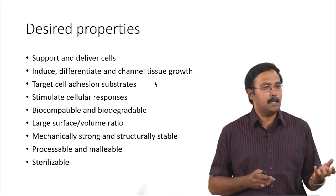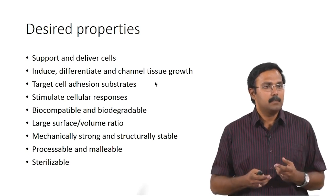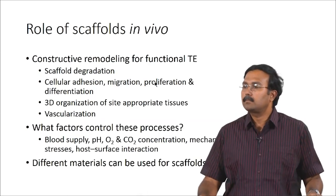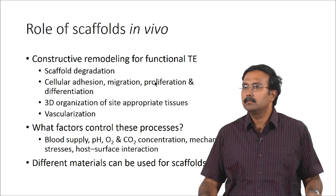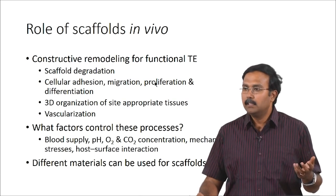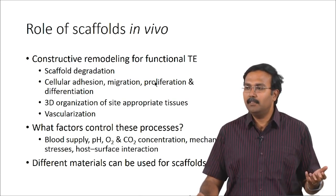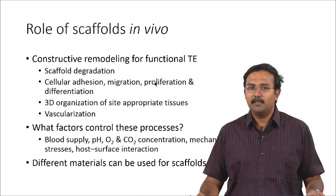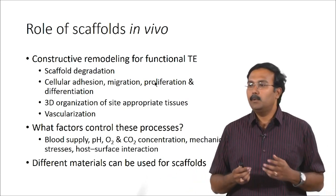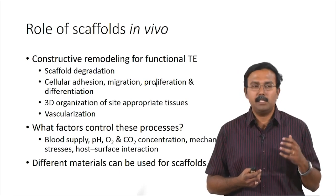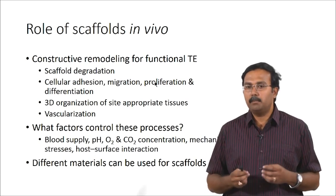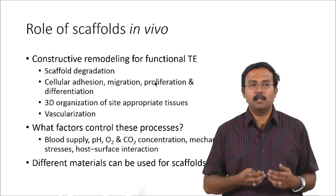How you provide these desired properties is the challenge — you need to look at what materials and chemistries can be used for cross-linking; the level of cross-linking will determine mechanical strength. Optical properties matter for specific tissues such as a cornea scaffold, while electrical properties matter for nerve tissue scaffolds. Physical properties are primarily driven by the type of tissue you are trying to engineer — bones and muscles have different mechanical properties.